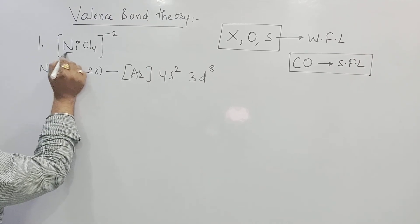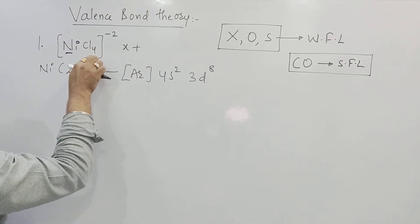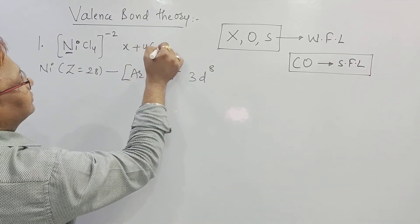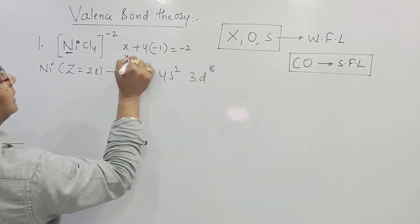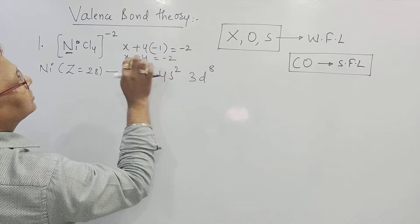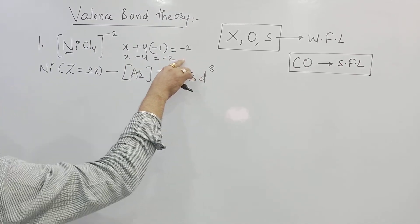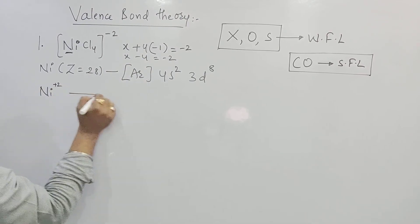Now what is the oxidation number of Ni? Ni's oxidation number means X plus 4 Chlorine. And oxidation number of all the halogens is minus 1, so 4 times minus 1 equals charge minus 2. So X minus 4 equals minus 2, X equals plus 2. So my Ni will have the valency plus 2.